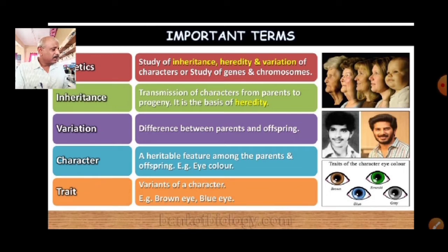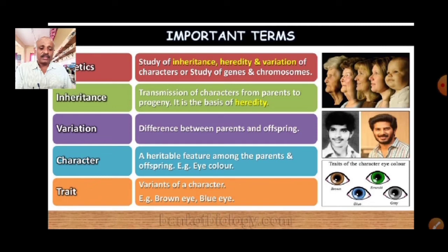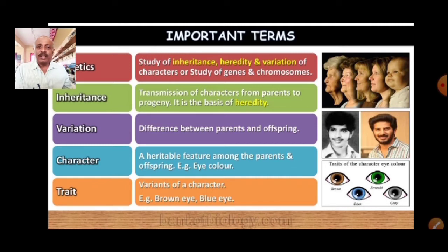Variation is the difference in characteristics shown by the individuals of a species, and also by the offspring — or siblings — of the same parents. It is the difference in the characters. We are all siblings, but we are not the same; we are totally different, basically from the same origin. So we say it is called variation.